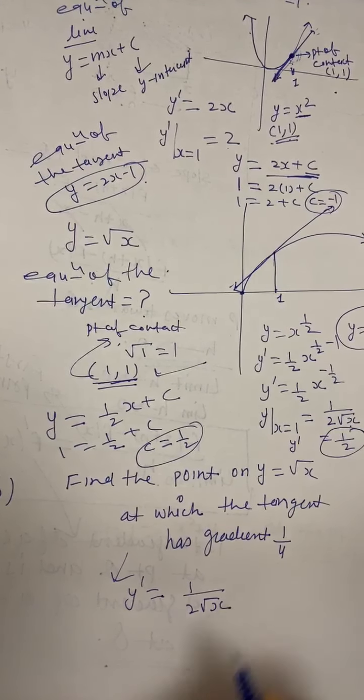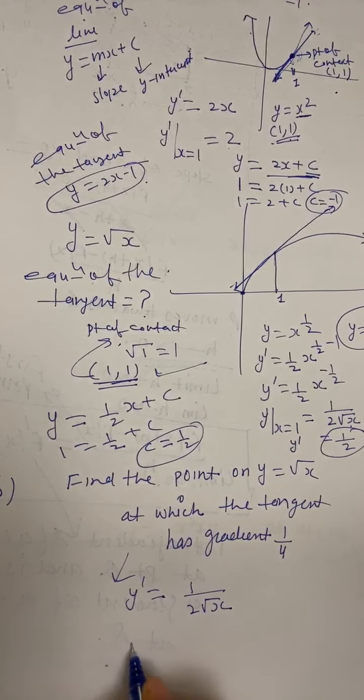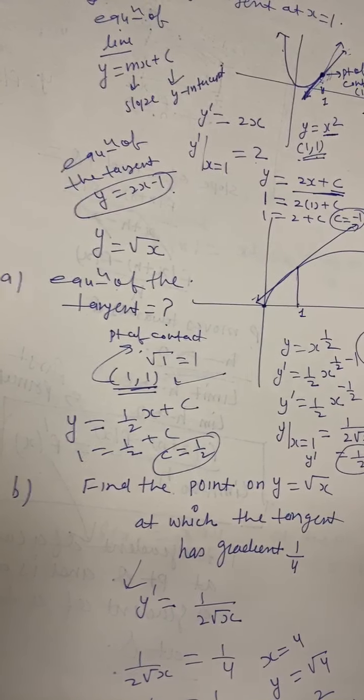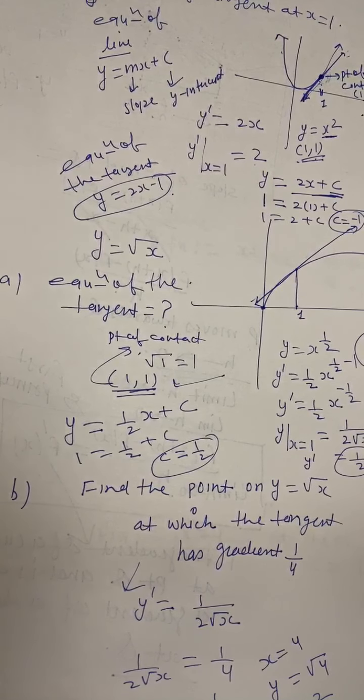Now find the point on y equals square root of x where the tangent has gradient one-quarter. We already know y' equals 1 over (2 square root of x). Setting this equal to one-quarter: 1 over (2 square root of x) equals one-quarter, so 1 over square root of x equals one-half, meaning square root of x equals 2, so x equals 4. Then y equals square root of 4 equals 2. The point of contact is (4, 2).